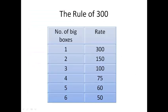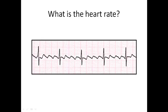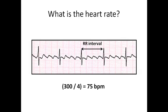To simplify for clinicians, there is the rule of 300: according to the number of big boxes in the RR interval, you can estimate heart rate without calculation. If large squares equal 1, heart rate is 300; 2 squares = 150; 3 = 100; 4 = 75; 5 = 60; 6 = 50. For example, if the RR interval is six large squares, 300 divided by 6 gives 50 bpm. If four large squares, 300 divided by 4 gives 75 bpm.